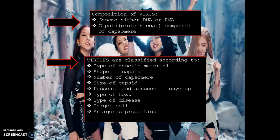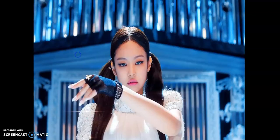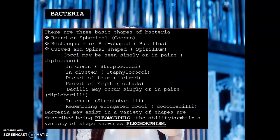The next category of microorganism is bacteria. There are three basic shapes of bacteria: round or spherical, also called coccus; rectangular or rod-shaped, also known as bacillus; and curved and spiral-shaped, also known as spirillum.